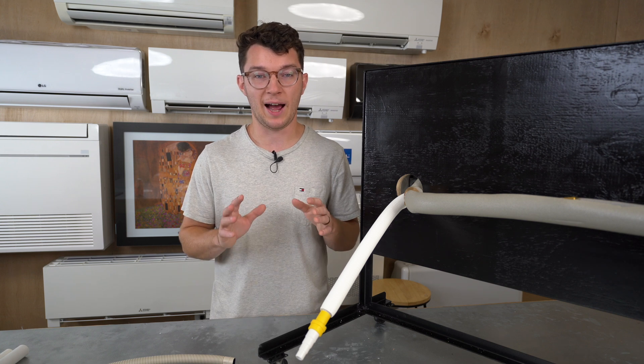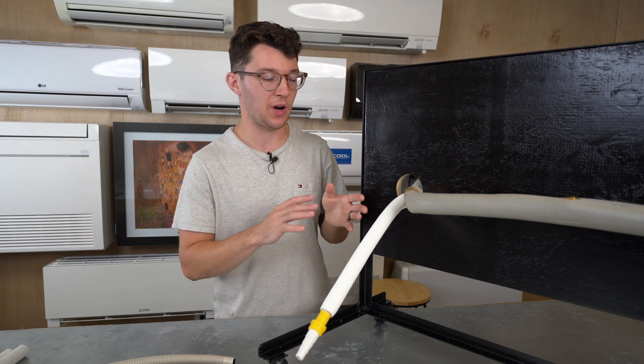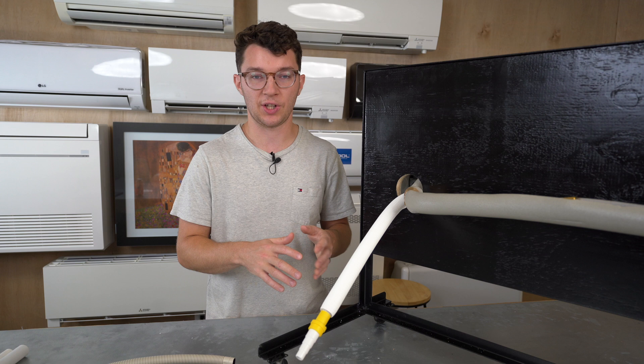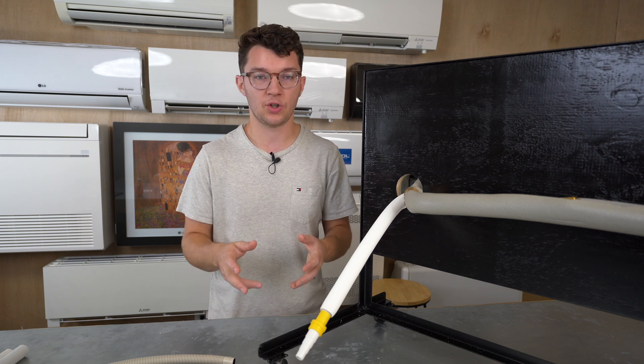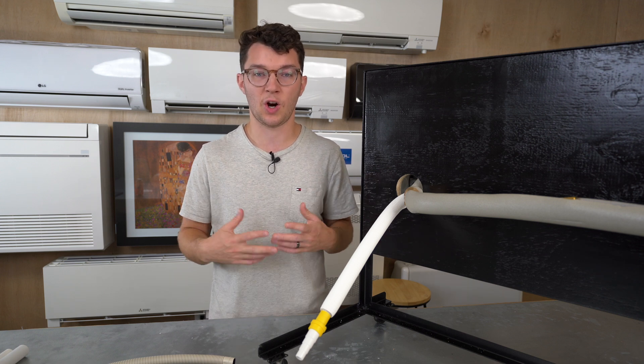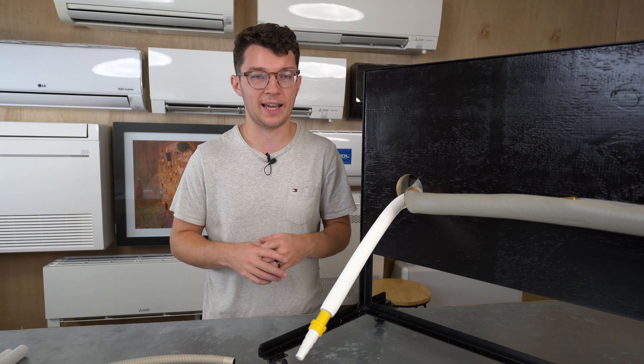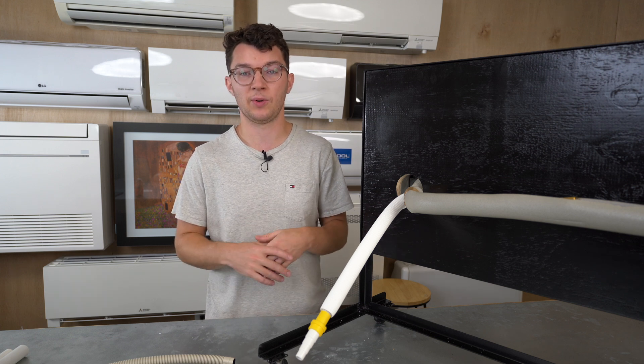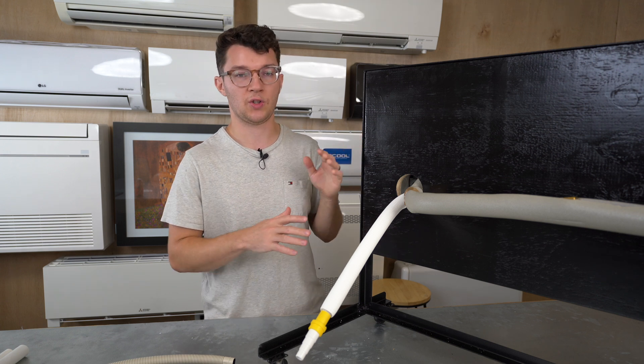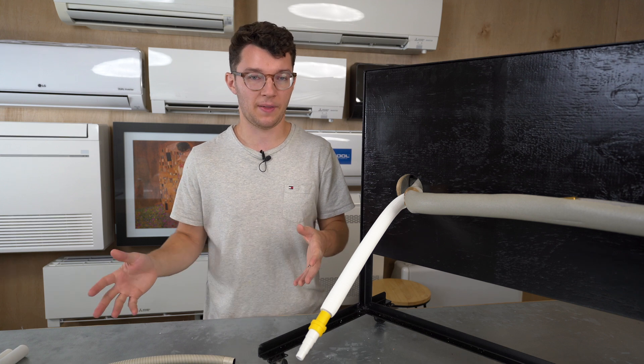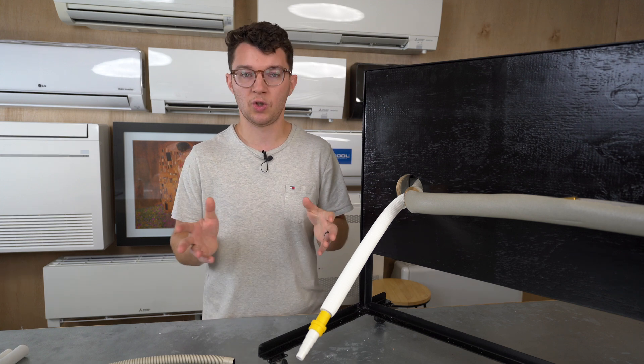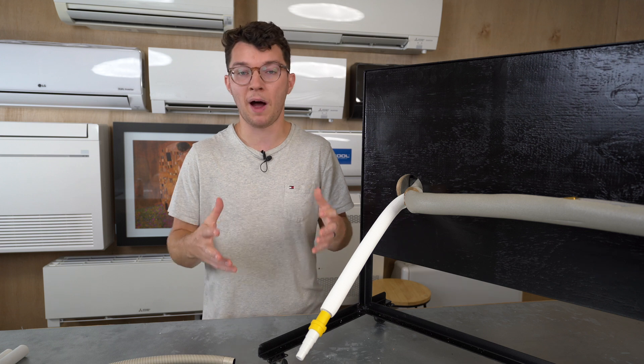Today we covered what to do with condensate when you have a gravity feed and you have a downward slope using flex drain hose, as well as transitioning to hard PVC. What we didn't talk about today is if you don't have a downward slope from your indoor unit to wherever you're depositing that condensate. So what do you do in that circumstance? Use a pump.